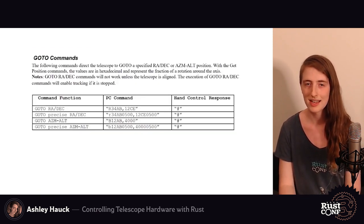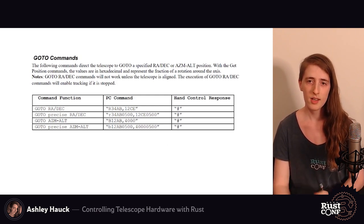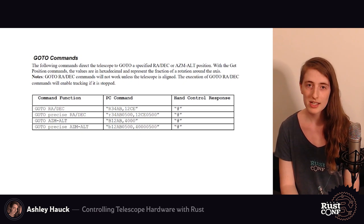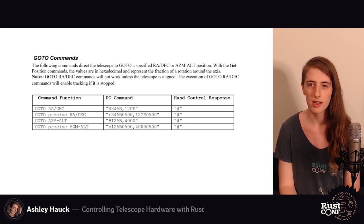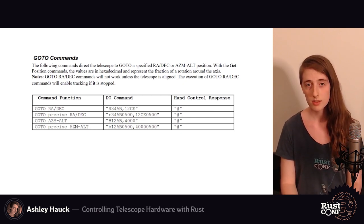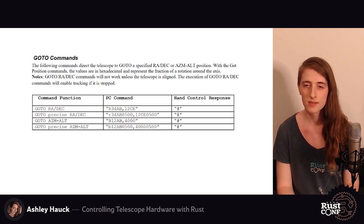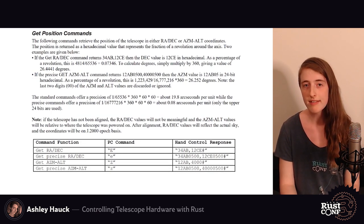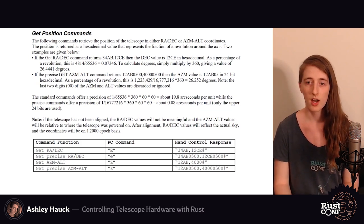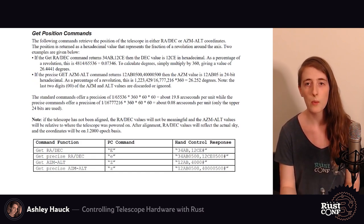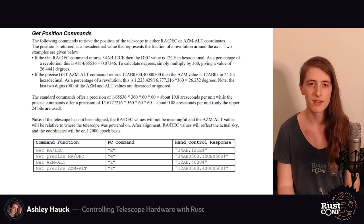Scrolling down in the document, we have various commands we can send to the motors. 'Go-to' is the term in astronomy to say, 'telescope, point to this point in the sky.' We do this by sending the letter R down the serial pipe, followed by a right ascension encoded in hexadecimal, then a comma, then the declination in hexadecimal. In response, the hand controller sends back a hash symbol to indicate success. Similarly, retrieving data from the mount works the same way — we send the letter E and get back right ascension and declination in hexadecimal, telling us where the telescope is currently pointing.